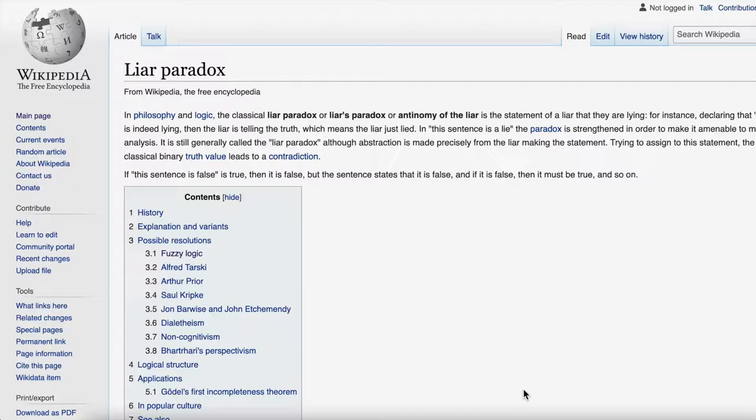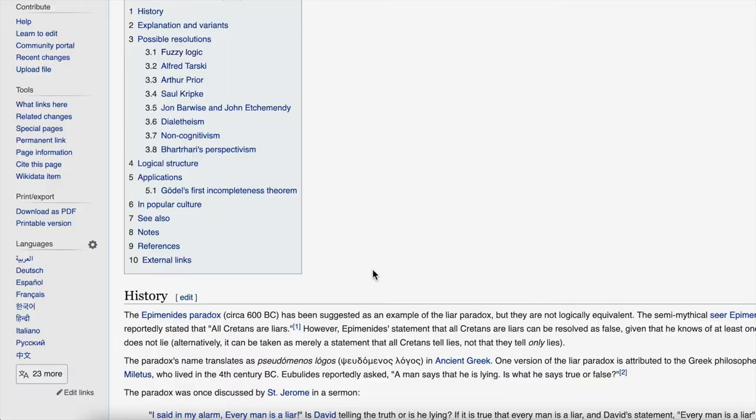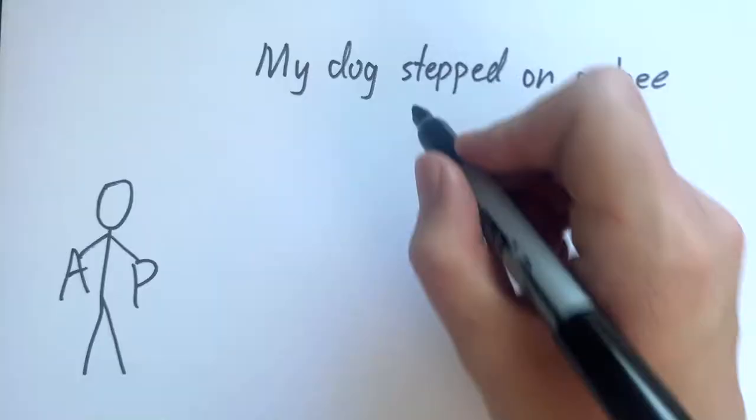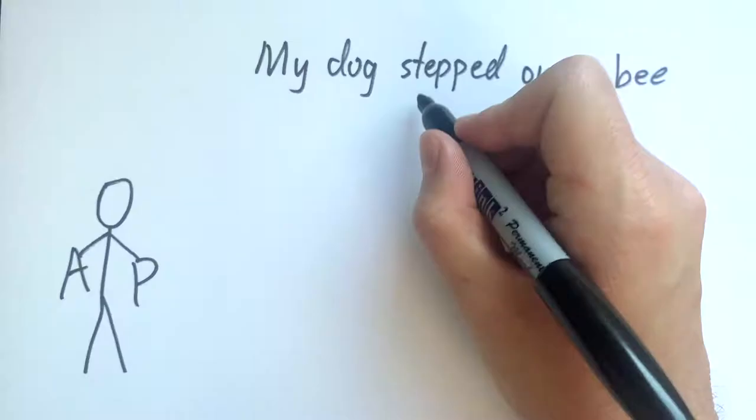If you look up the liar paradox on Wikipedia, you'll see that many people claim to have solved it. Arthur Pryor reasons that every statement implicitly states that it itself is true. For example,